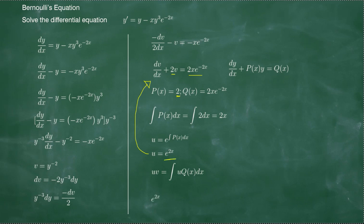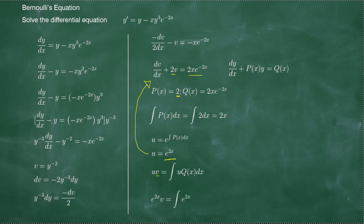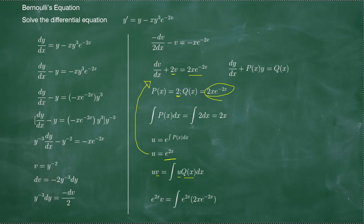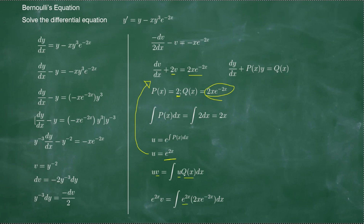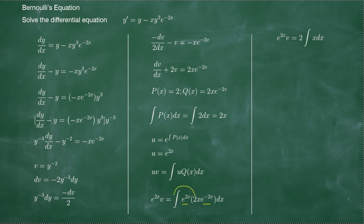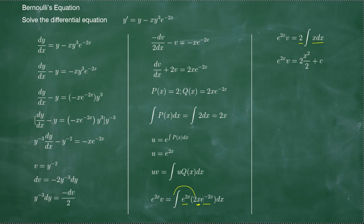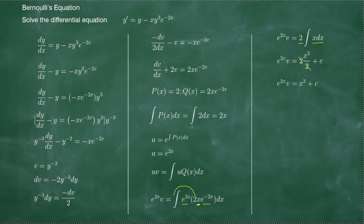So u, which is e to the 2x, multiplied by v equals the integral of e to the 2x times 2x times e to the negative 2x dx. Multiplying e to the 2x times e to the negative 2x gives e to the 0, which is 1. We're left with 2 times the integral of x dx, which equals x squared over 2. So we have 2 times x squared over 2 plus C, and the 2s cancel.